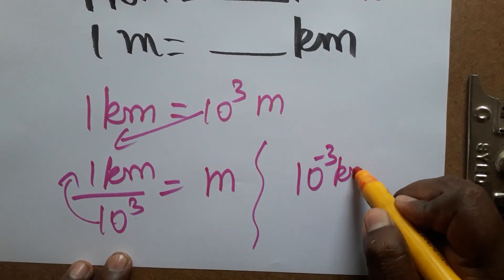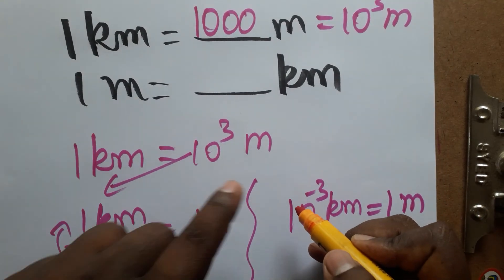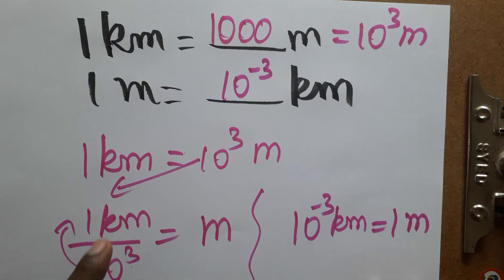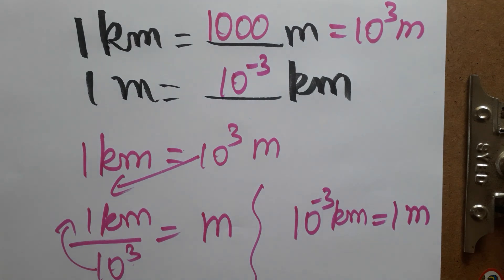So 10 power minus 3 kilometer is equal to one meter. Therefore, one meter is 10 power minus 3 kilometer. Thank you for watching my channel. If you like my channel, please subscribe.